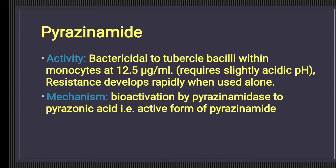Pyrazinamide is bactericidal to tuberculosis within monocytes at 12.5 mg per ml. Resistance develops rapidly when used alone, which is a problem common to all anti-tuberculosis drugs. Its basic mechanism of action is bacteriostatic and requires bioactivation. It is activated by pyrazinamidase, which is encoded on the pncA gene. This gene converts pyrazinamide into pyrazinoic acid. Any genetic mutation in the pncA gene leads to resistance to this drug.